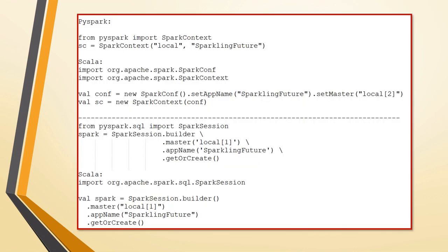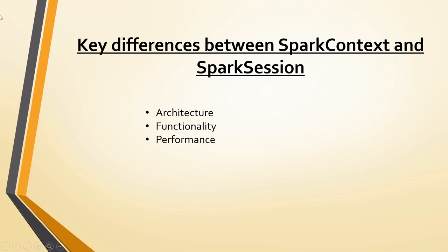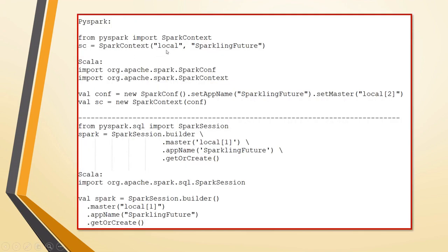So how to create Spark Context and Spark Session — this is the sample code. In PySpark, we say 'from PySpark import SparkContext'. SC is the variable that we are creating. By default, we use SC as the variable name — it's an industry standard. You can give any name. And we call the SparkContext function with 'local' and some app name.